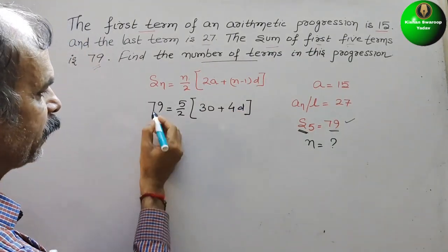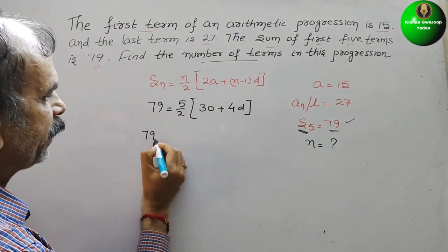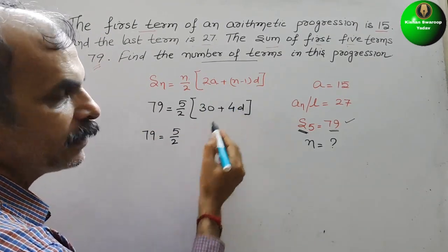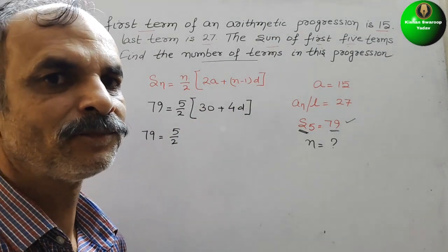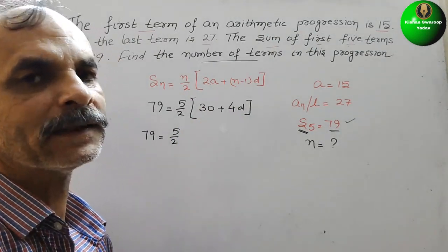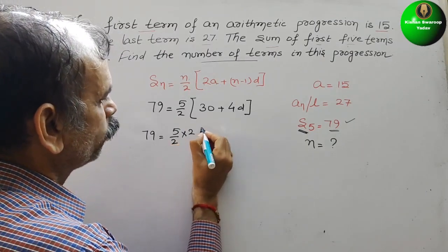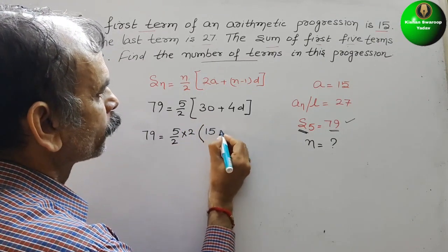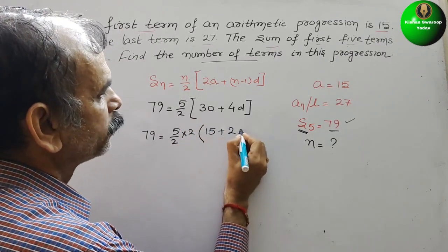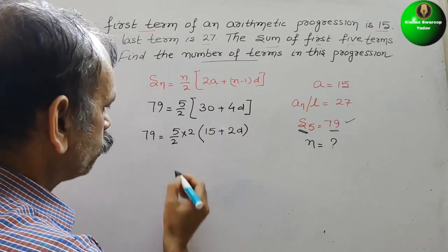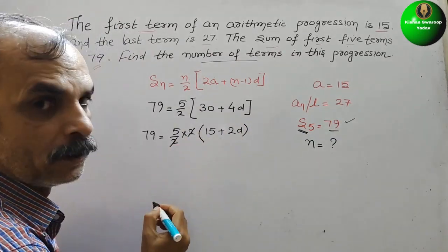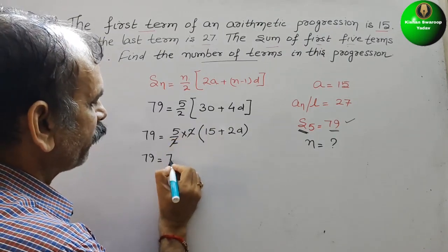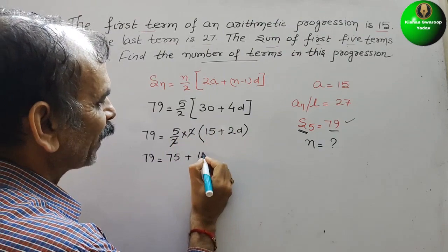Now solve this. What you will get? 79 is equal to 5 by 2, and 2 is common, so we will write 2 as outside, into 2, and in bracket you will get 15 plus 2D. 2 and 2 we will reduce, so 79 is equal to 5 into 15 is 75 plus 5 into 2 is 10D.